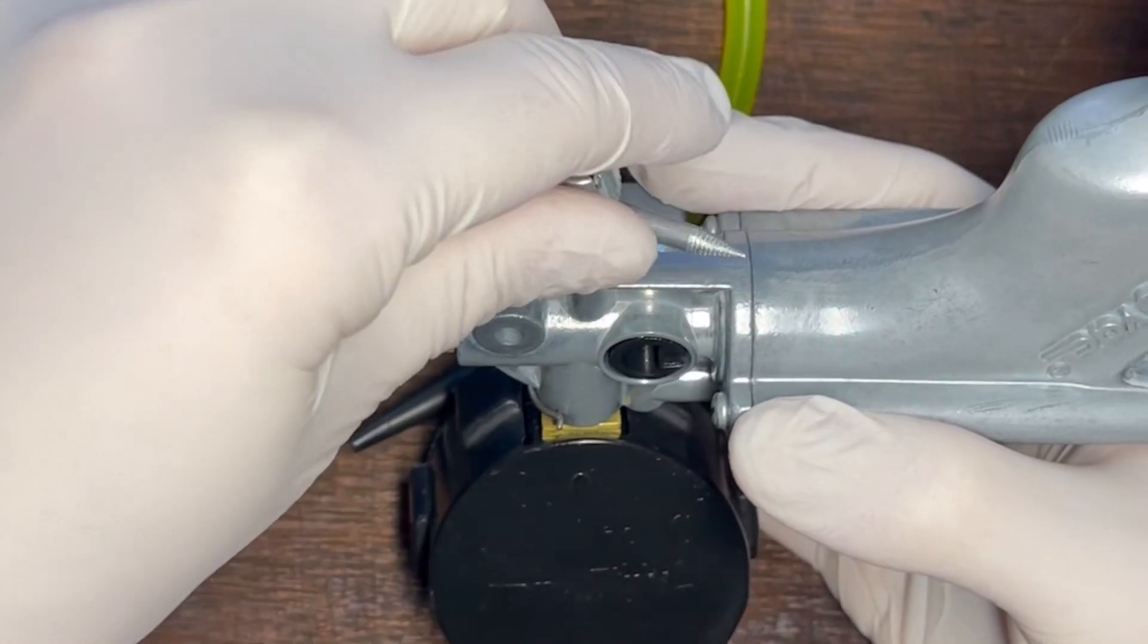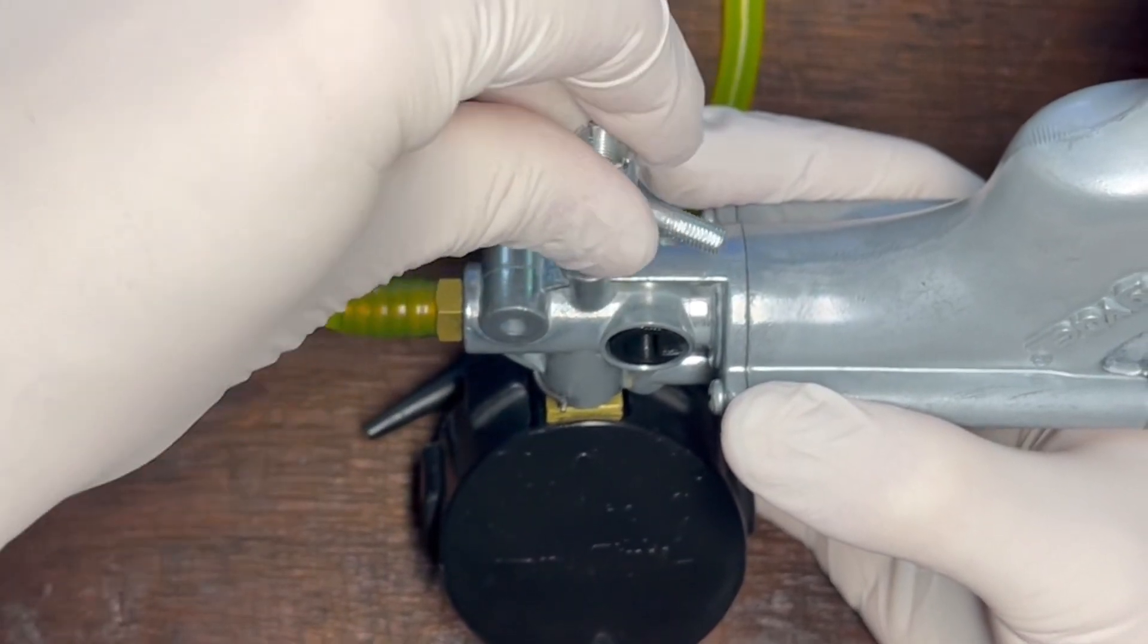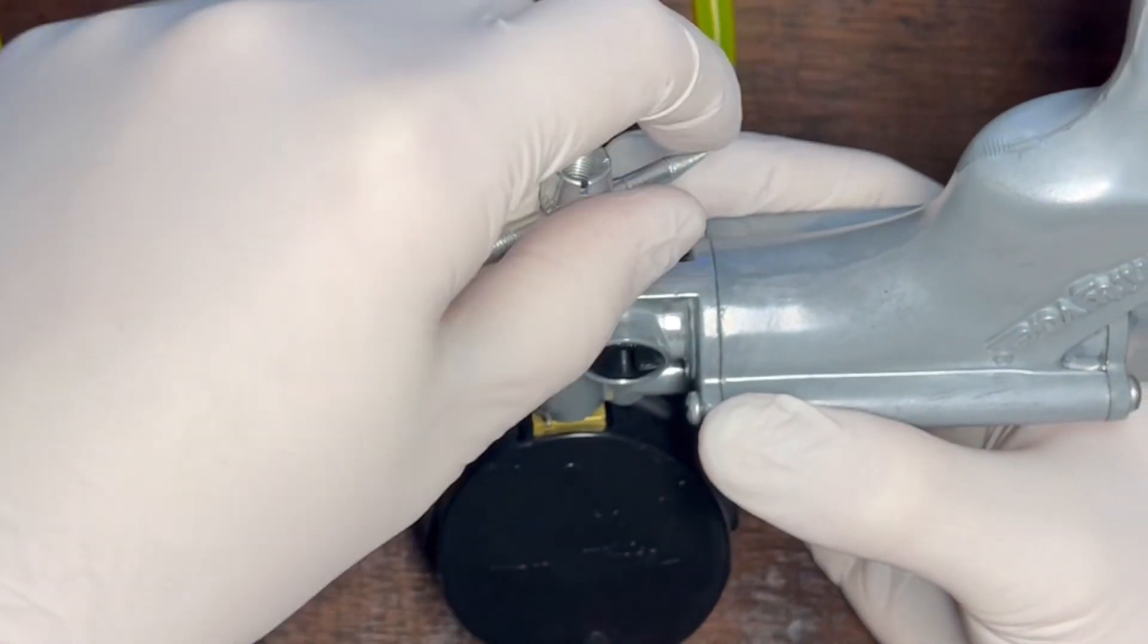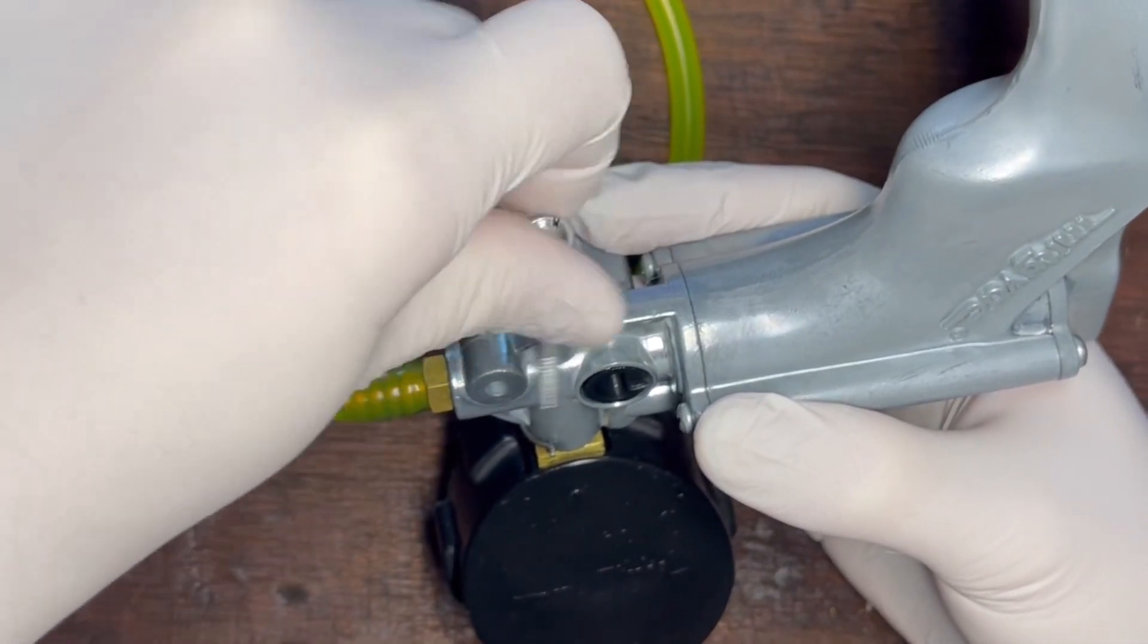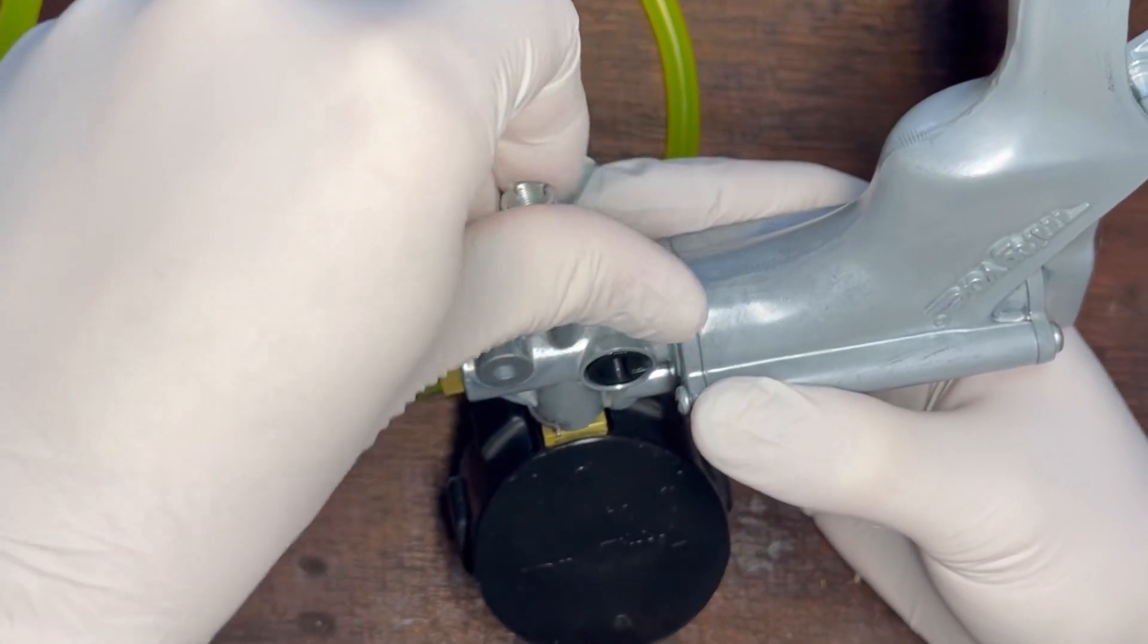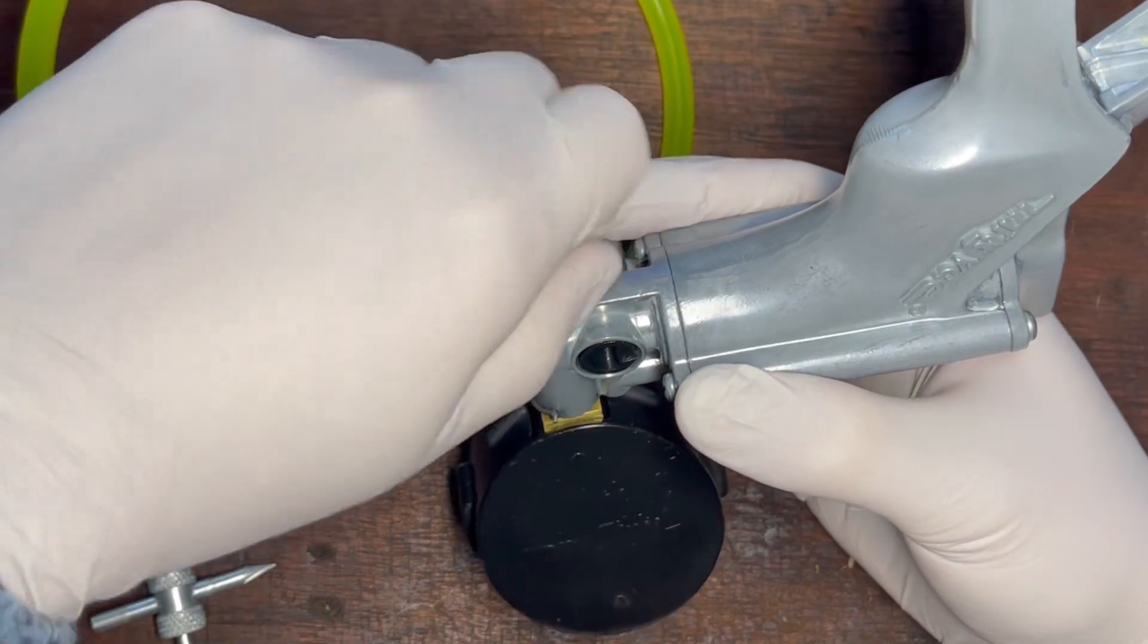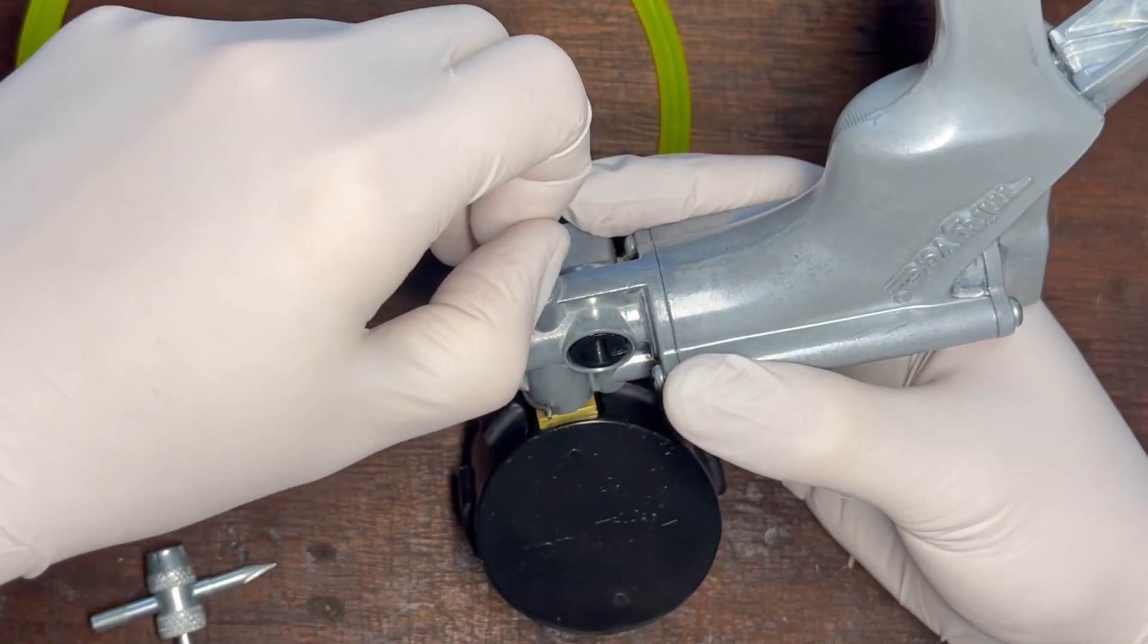Simply place that in, we'll gently turn it anti-clockwise, and the Schrader valve will come out. The Schrader valve does come as part of the service kit, so you might as well replace it while you're here. Out it comes.